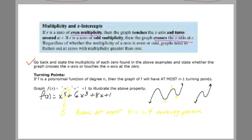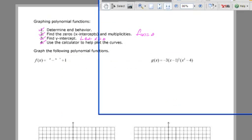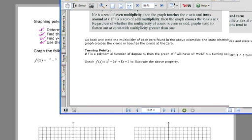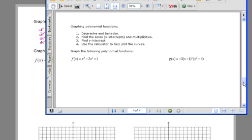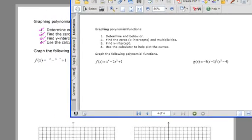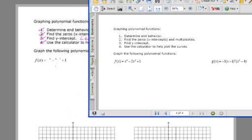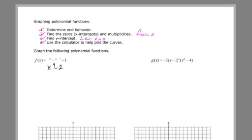So there's our polynomial function x to the 4th minus 2x squared plus 1, and we want to work on graphing this polynomial function. Let's think about the end behavior from this leading term. The degree is 4, so I should know how the ends are going to behave.